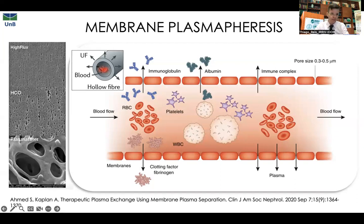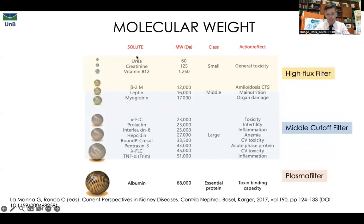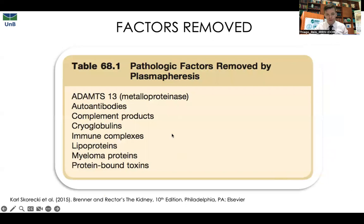Here on the left is the scanning electron microscopy of different membranes. When you compare a high-flux filter membrane for hemodialysis with a plasma filter, there is a huge difference in pore size. With high-flux filters we can remove molecules up to 12 kilodaltons; with medium cut-off filters, up to 50 kilodaltons; with a plasma filter, more than 900 kilodaltons. The factors we usually want to remove include ADAMTS-13, autoantibodies, lipoproteins, and others.